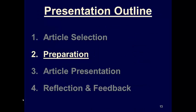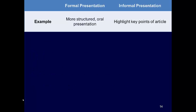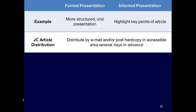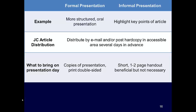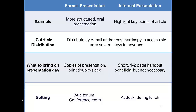Moving on with the preparation step. There are two general formats of journal clubs: one being more formal and the other being informal. A formal presentation is more structured. Whereas an informal presentation will simply highlight key points of an article. Either way, it is important to provide an electronic or hard copy of the article several days in advance. For a formal presentation, make sure to bring copies of the presentation and preferably print it in a double-sided format.